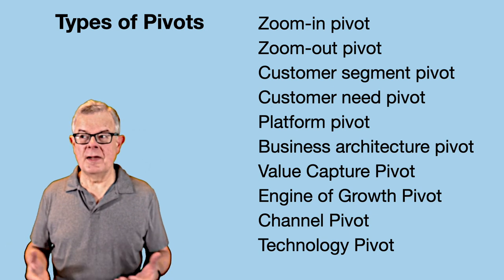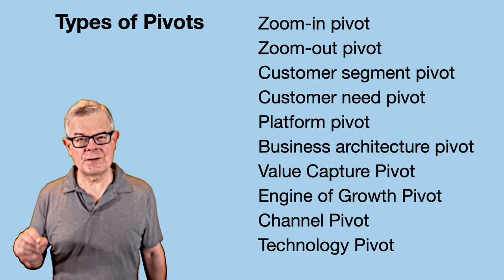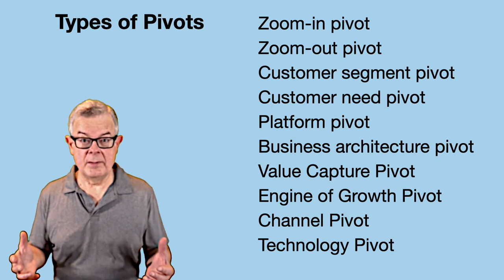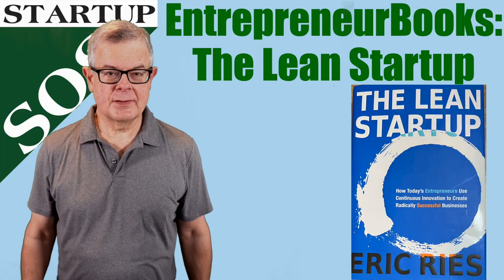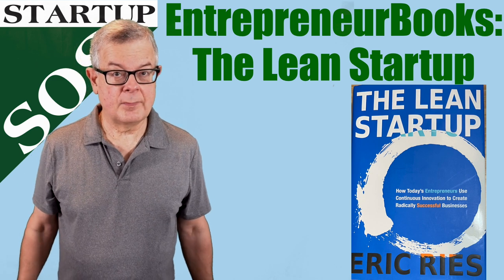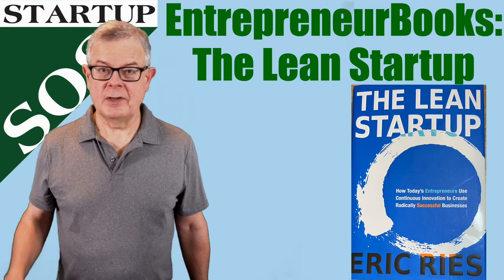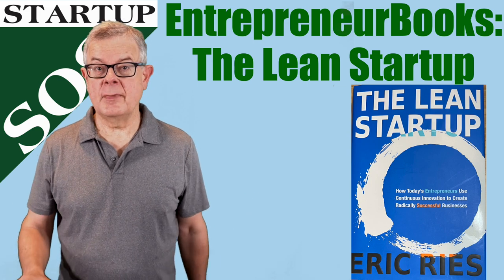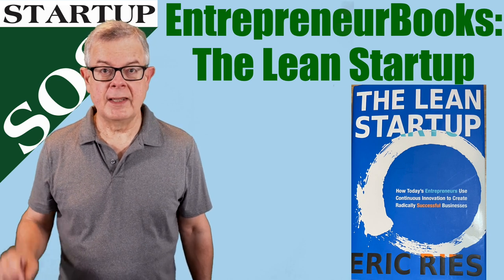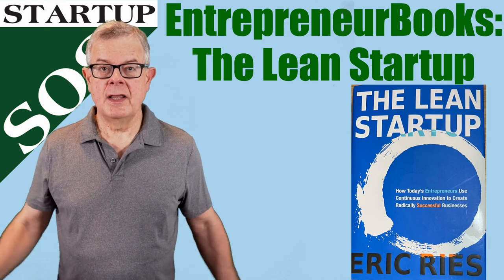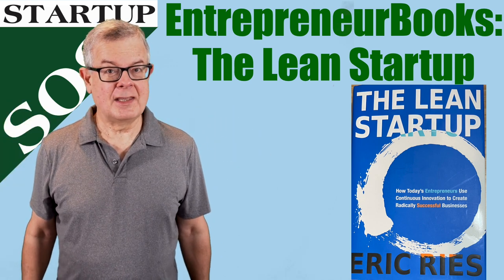Deciding between pivot types and deciding when and why to pivot is complicated, but it's one of those important things to consciously think about as you run experiments and MVPs to optimize your business model. Those are some of the key ideas covered in The Lean Startup book. Use the link in the notes to get your own copy — that is an affiliate link and the channel earns a small commission. If this was helpful, please click the like button, share it with other entrepreneurs, leave a comment or question, subscribe, and click the notification bell for more videos.